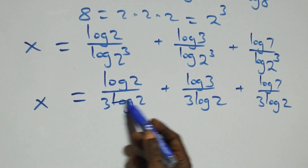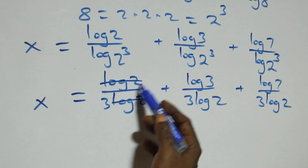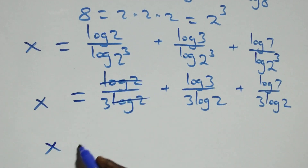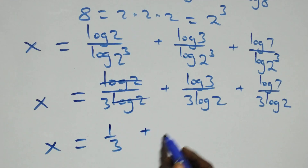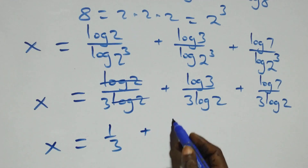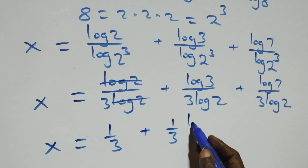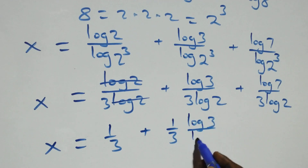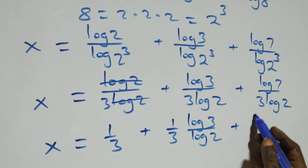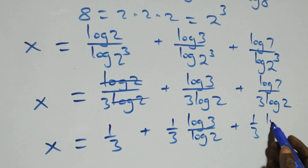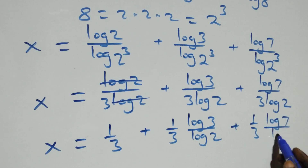In the first fraction, log2 cancels and we get 1/3. For the other terms, we factor out 1/3: x equals 1/3 plus (1/3)·(log3/log2) plus (1/3)·(log7/log2).